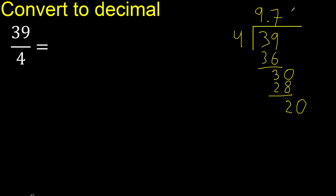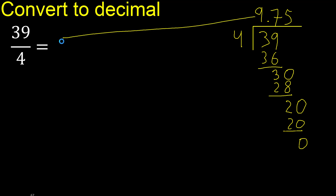4 multiplied by 5 is 20. 20 minus 20 equals 0. Remainder is 0, therefore we are finished. The answer is 9.75.